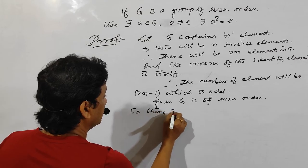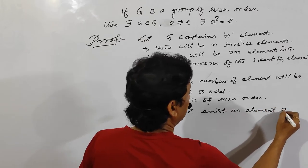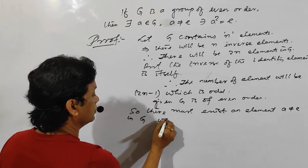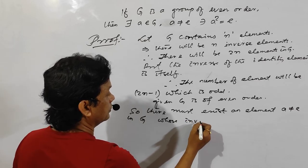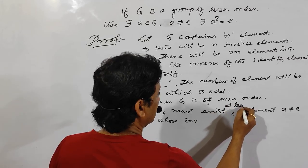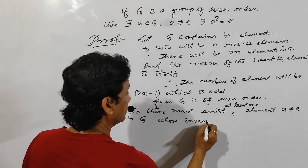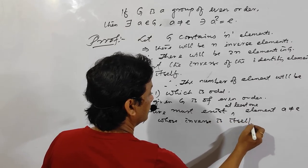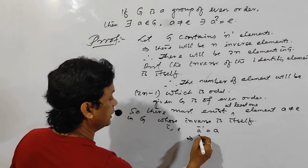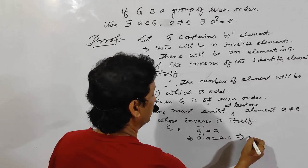So there must exist at least one element a, not equal to e, in G, whose inverse is itself. That is, a inverse equals a. Now multiply a on both sides: a inverse times a equals a times a, which gives e equals a squared. So a squared equals e.